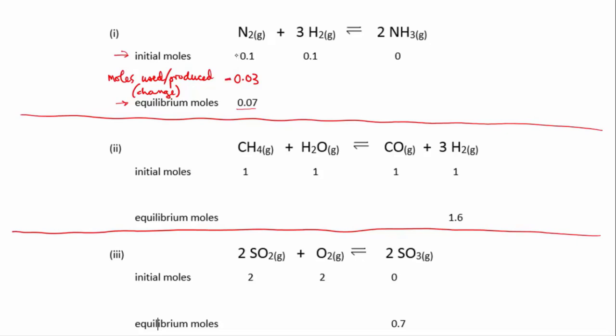Now how much hydrogen was used? Well, we know that for every one mole of nitrogen, three moles of hydrogen get produced - it's a one to three - sorry, for every one mole of nitrogen used, three moles of hydrogen get used. So it's a one to three stoichiometric ratio.